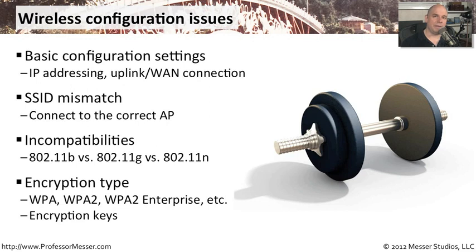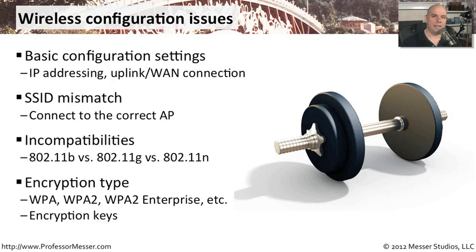We also have to think about the type of encryption we're going to use inside of the access point, and everybody who is a client has to be configured exactly the same way. We want to make sure we're choosing the correct encryption type — maybe it's WPA or WPA2. If you're in a larger environment and planning to integrate with a back-end authentication server, maybe you want to configure it to be WPA2 Enterprise. You also have to make sure your encryption keys are exactly the same, especially with multiple access points, so people can seamlessly move from one access point to the other.